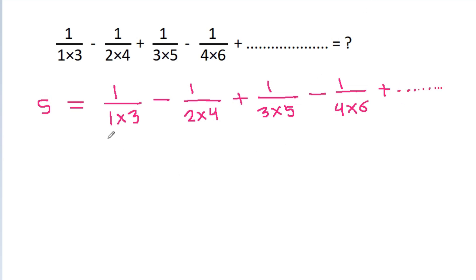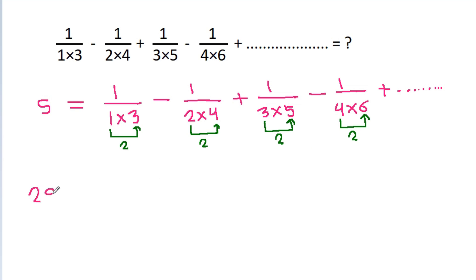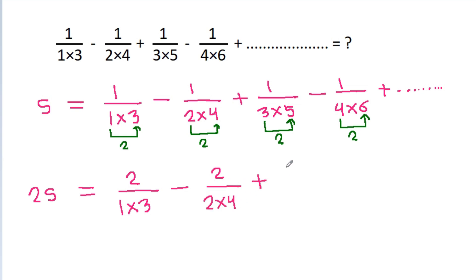Now, the difference between 1 and 3 is 2, the difference between 2 and 4 is 2, the difference between 3 and 5 is 2, and the difference between 4 and 6 is 2. So, 2S will be equal to 2/(1×3) - 2/(2×4) + 2/(3×5) - 2/(4×6) + so on.